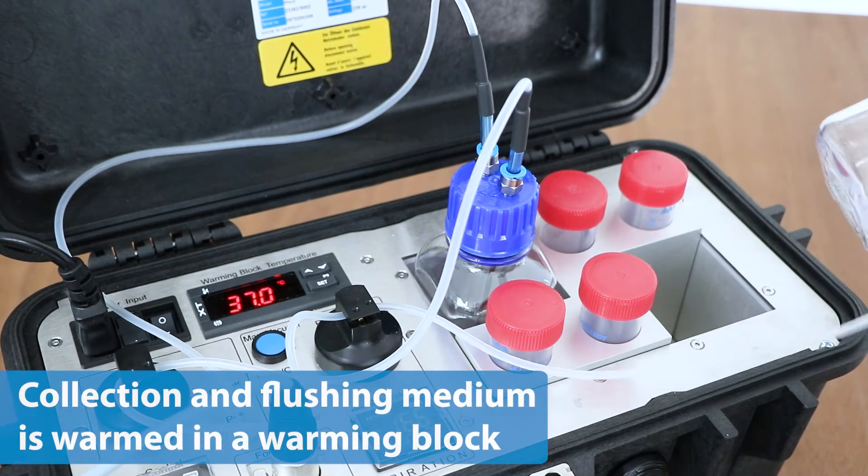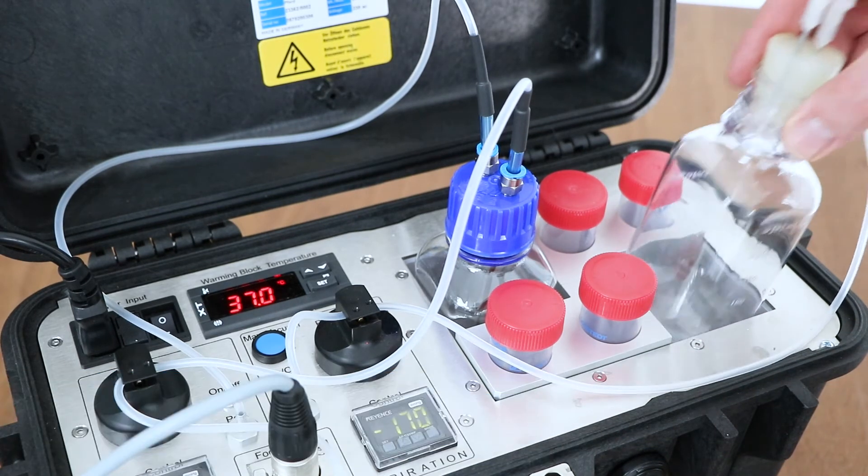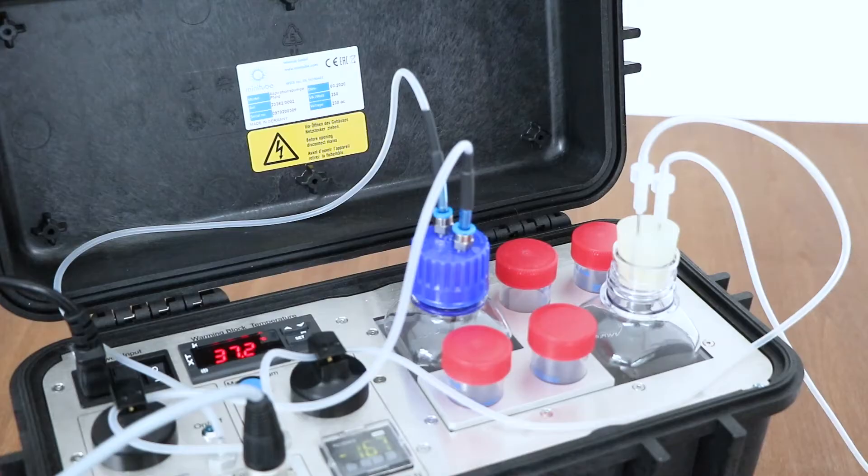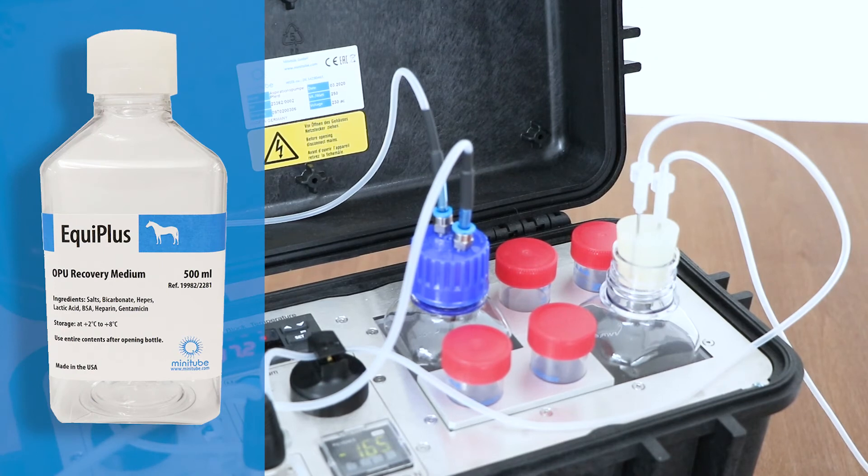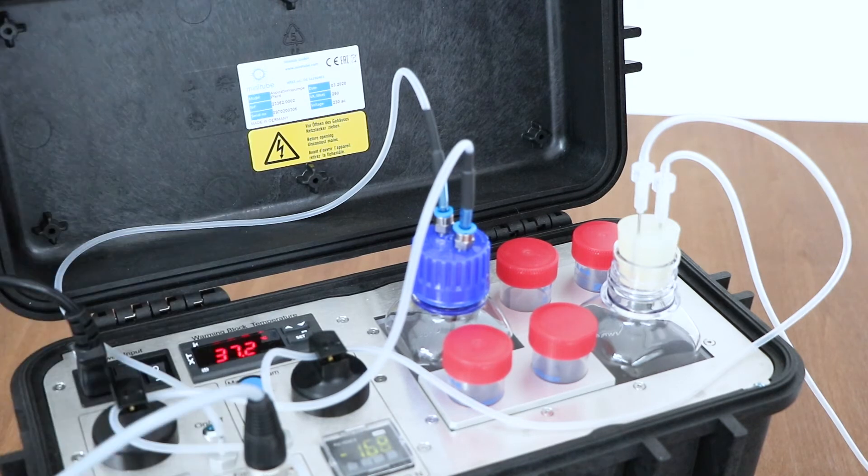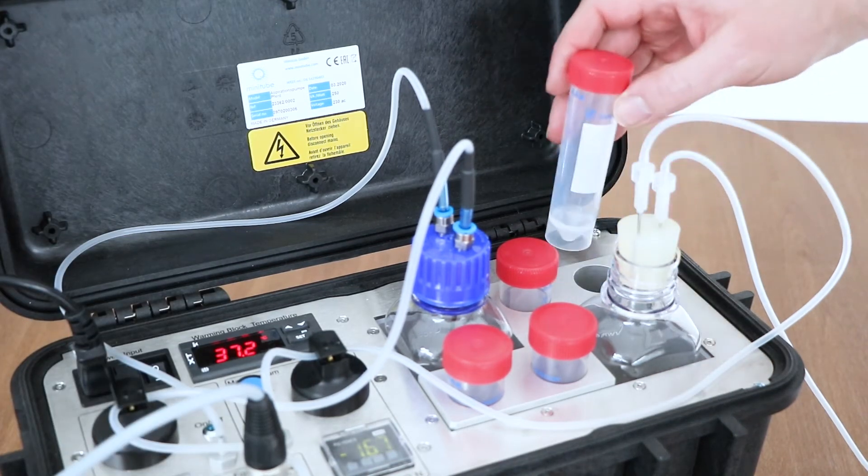The injection and aspiration bottles are enclosed by warm aluminum blocks to provide the correct temperature for the oocytes at all times. The collection and flushing medium is warmed in a warming block containing two 250 milliliter bottles and four additional spaces for 50 milliliter tubes.